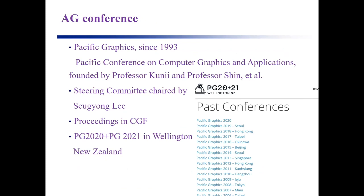Under the AG Association, we have three successful conferences. The first one is Pacific Graphics, founded in 1993. The full name is Pacific World Conference on Computer Graphics and Applications, founded by Professor Kuni and Professor Shin from Korea. The steering committee is currently chaired by Professor Song Yong Li. All papers in Pacific Graphics are published in Computer Graphics Forum as a special issue. Last year and this year, Pacific Graphics is in Wellington, New Zealand. Unfortunately, due to the pandemic, it's an online conference.